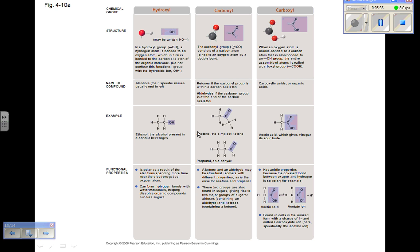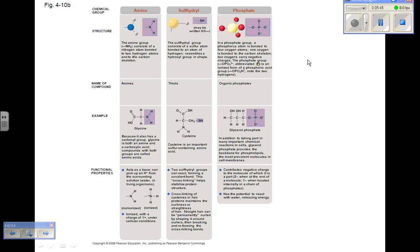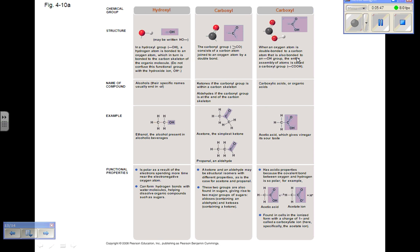Carbonyl groups are characteristics of ketones and aldehydes, like sugars. Carboxyl groups are found on carboxylic acids, like fatty acids and sugars. The carboxyl group confers acidic properties, donating hydrogen ions to solution.